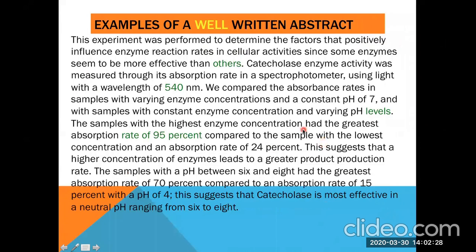As for the second sample, the well-written abstract, the words highlighted in green include 'others,' '540,' 'levels,' and 'rate of 95%.' The word 'others' indicates that the sentence is clear and concise. When we read 'this experiment was performed to determine the factors that positively influence enzyme reaction rates — to be more effective than others' — this sentence is quite clear and concise, telling the reader why the experiment was carried out. It poses the question of why some enzymes are more effective than others and explains that the experiment was set up to determine what causes these differences.